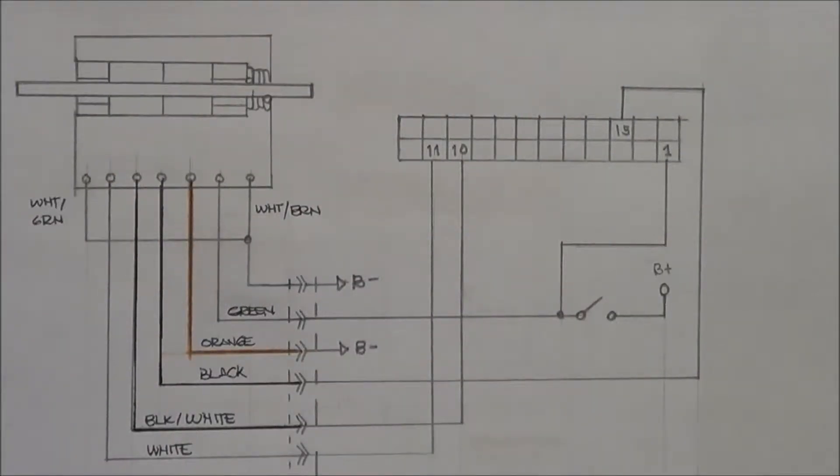Okay, so this is a wiring diagram that I drew up for the Curtis ET-XXX, which is the electronic throttle that was used on the pallet truck that I was working on that had the 1244 Curtis motor controller.